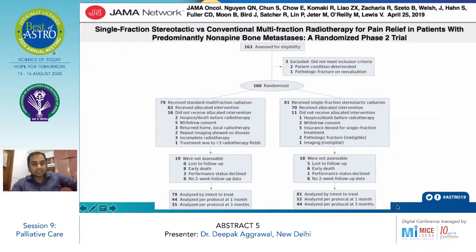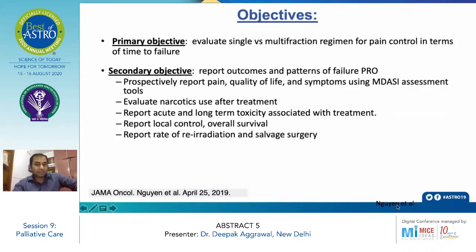Coming to the current study — single fraction SBRT versus conventional multi-fraction RT for pain relief in patients with oligometastatic non-spine bone metastases — 163 patients were recruited, 160 were randomized: 79 patients treated with multi-fraction regimen and 81 with single fraction. The primary objective was to evaluate single versus multi-fraction in terms of pain control. Secondary objectives included prospective-reported pain, quality of life, orthotic events, acute and late toxicity, local control, survival, re-RT, and salvage surgery.